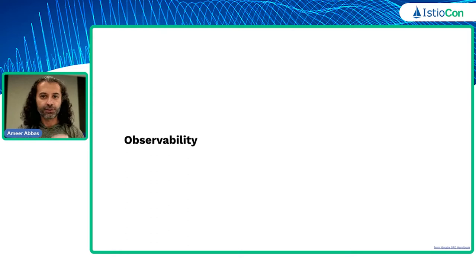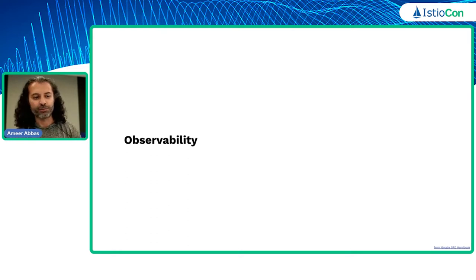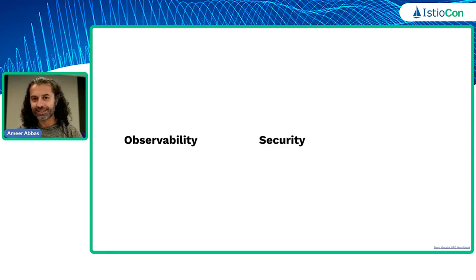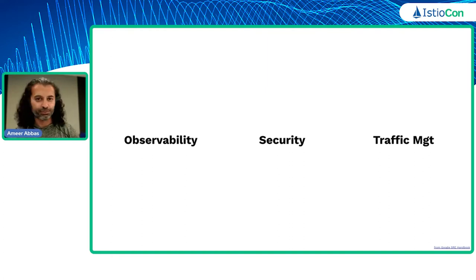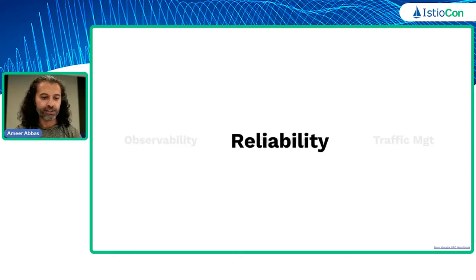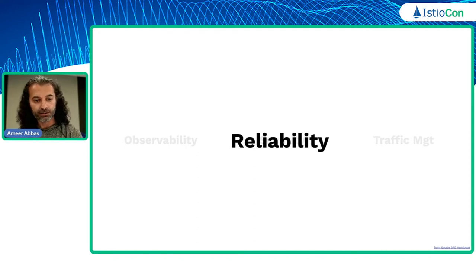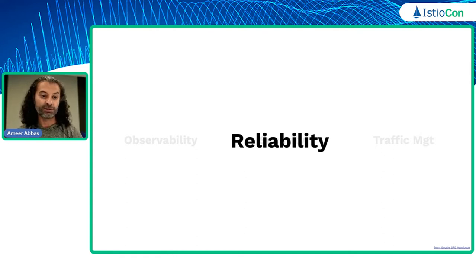When we talk about service mesh, we really talk about three things: observability with metrics, tracing, and topology; security with authentication and MTLS; and advanced traffic management with canary deployments, blue-green, circuit breakers, and mirroring traffic. But there is a fourth tenet to service mesh, which is often misunderstood and overlooked — and that is reliability.